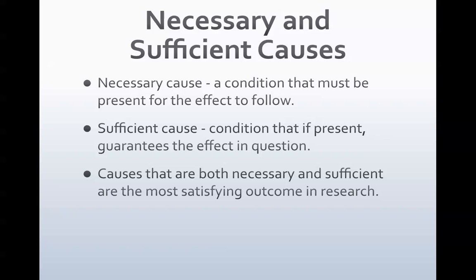Now let's talk about causes—this is the more philosophical area of the class. You have something called a necessary cause and a sufficient cause. A necessary cause is a condition that must be present for the effect to follow. A sufficient cause is a condition that, if present, guarantees the effect in question. Causes that are both necessary and sufficient are really the most satisfying outcomes in research, though that's not something you'll typically encounter in survey-based designs for this class.